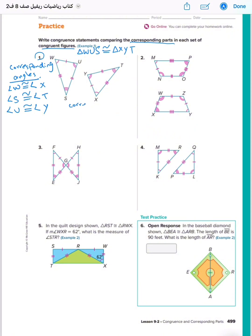Now let's write corresponding sides. WU, this side, it's congruent to the side XY. You can write from here, you can write from the figure, it's okay. W with the side XY.